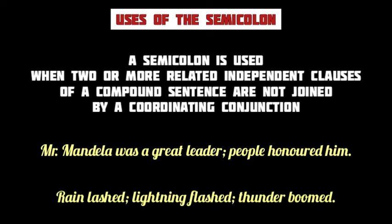Now we are going to learn the correct uses of the semicolon in a sentence. A semicolon is used to join two or more related independent clauses in a compound sentence when a coordinating conjunction is omitted. In other words, a semicolon may be used in place of a coordinating conjunction to join two independent clauses in a compound sentence.